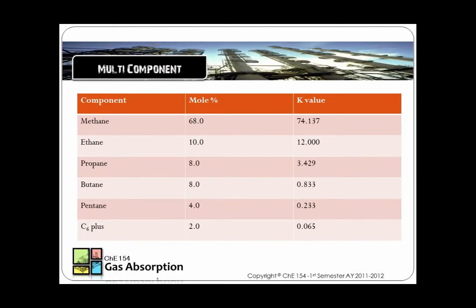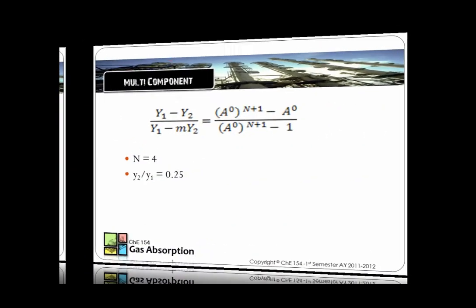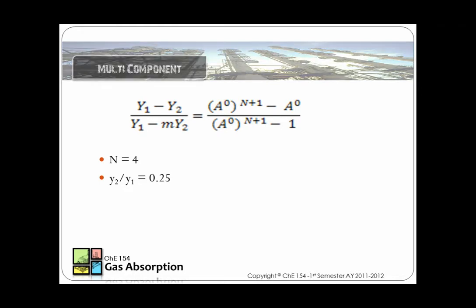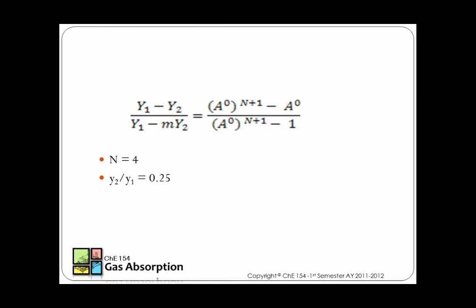In order to solve this problem, the absorption factors should be solved first. Butane's absorption factor can be solved by using the Kramsler formula. Y1 is given, and based on the problem, Y2 will equal Y1 times 0.25. The absorption factors of the other components can be computed using ratio and proportion by utilizing the liquid vapor equilibrium ratio or K values given in the problem.